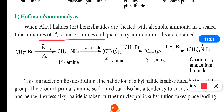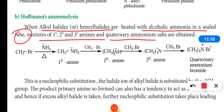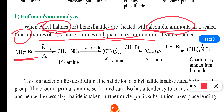In Hoffman's Ammonolysis, you get a mixture of primary, secondary, and tertiary amines along with quaternary ammonium salt. When alkyl halides or benzyl halides are heated with alcoholic ammonia in a sealed tube, taking methyl bromide as an example, ammonia reacts in the first stage to form a primary amine.